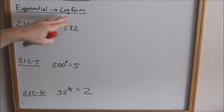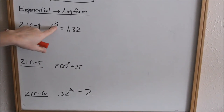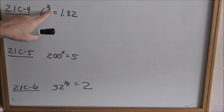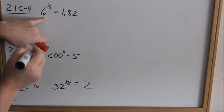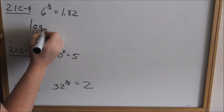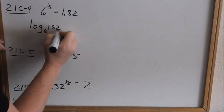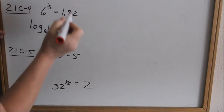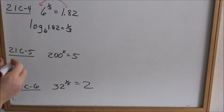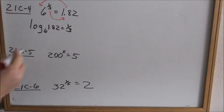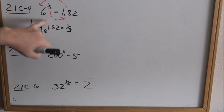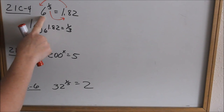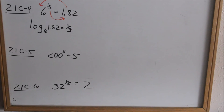Now we're going to go from exponential form to log form. They're going to give you the problem in exponential form — meaning you have a base to an exponent equals an answer. This is 21c4, and you want to put it in log form. This is your base, and this is your exponent. Remembering that's your base, you know log base 6 of 1.82 is equal to one-third. You're still going in a circular motion. This is your base — log base 6 of 1.82 is equal to one-third. The answer was there, and the exponent is always over here when you have it in log form.